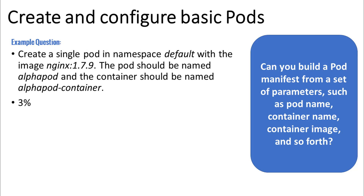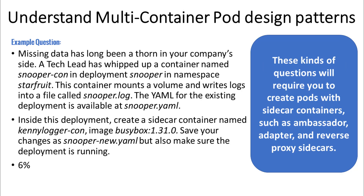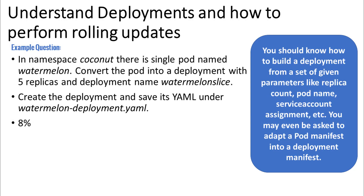Understand multi-container pod design patterns. These kinds of questions may require you to create pods with sidecar containers, such as ambassador, adapter, and reverse proxy sidecars. While you may need to have these types of containers work with each other, you will likely be given instructions on how to do so. Understand deployments and how to perform rolling updates — you should know how to build a deployment from a set of given parameters, like replica count, pod name, service account assignment, and so on. You may even be asked to adapt a pod manifest into a deployment manifest.